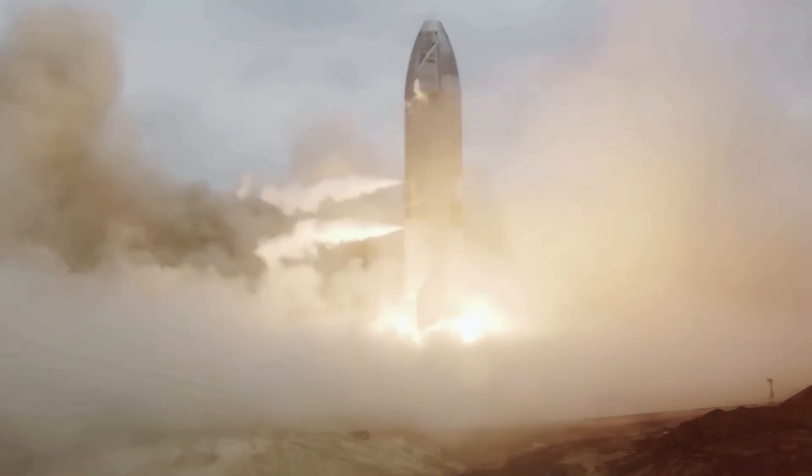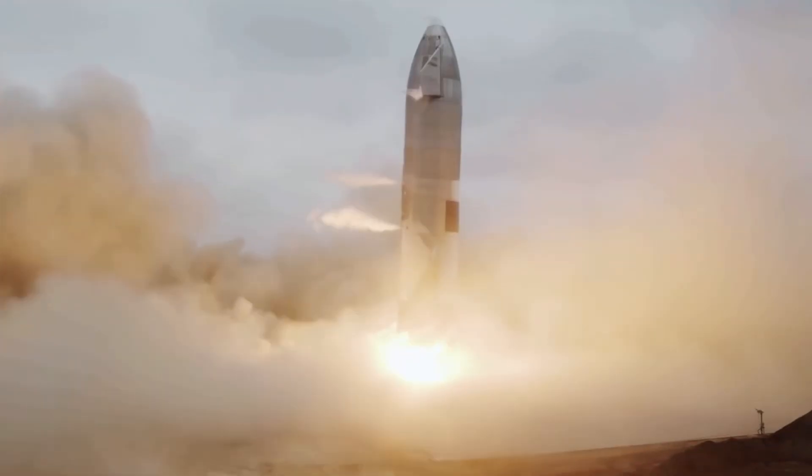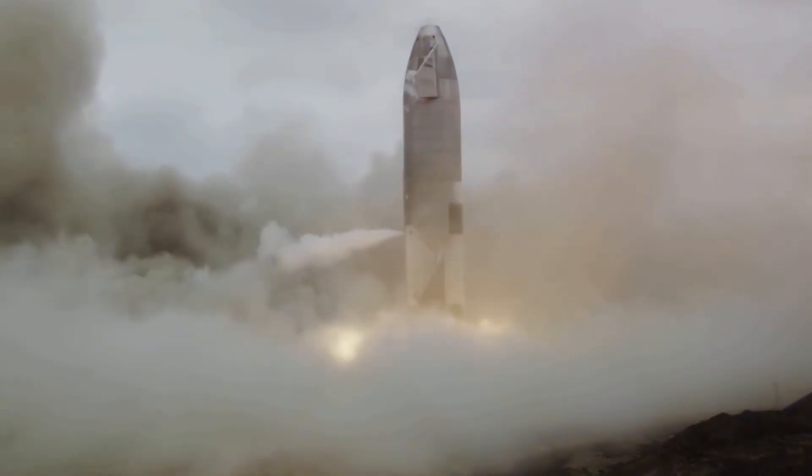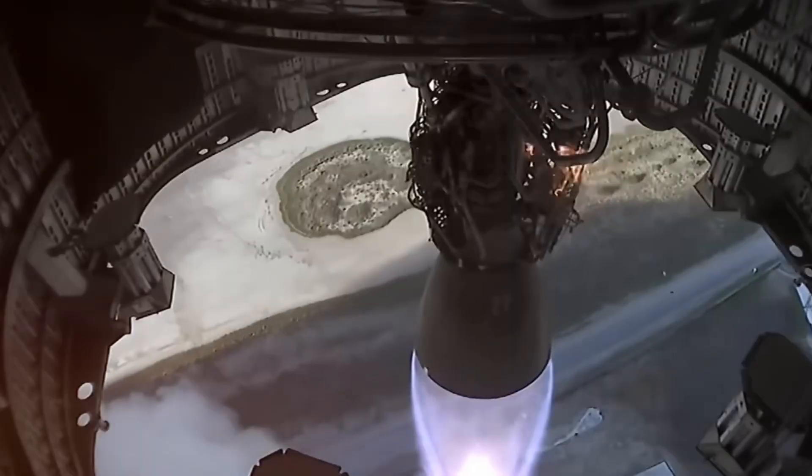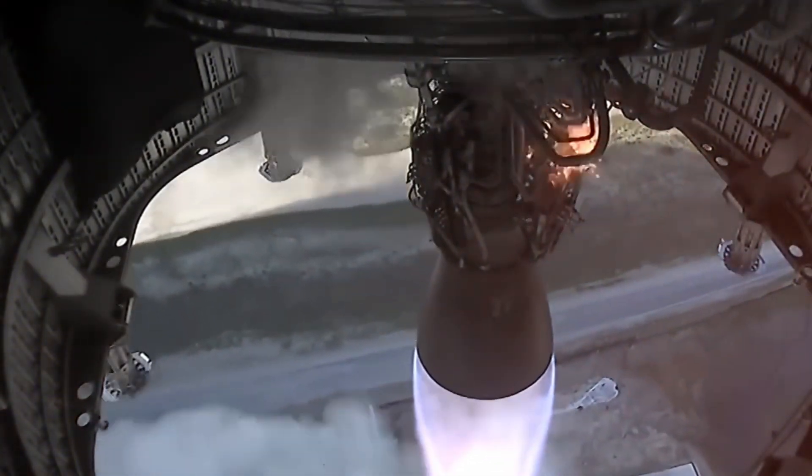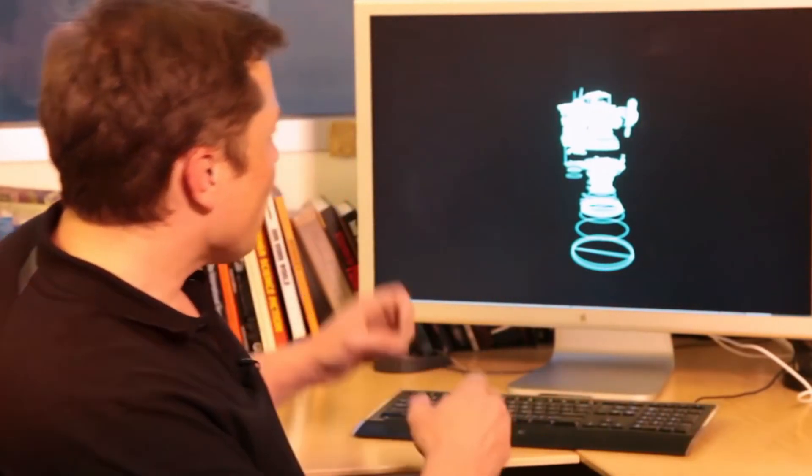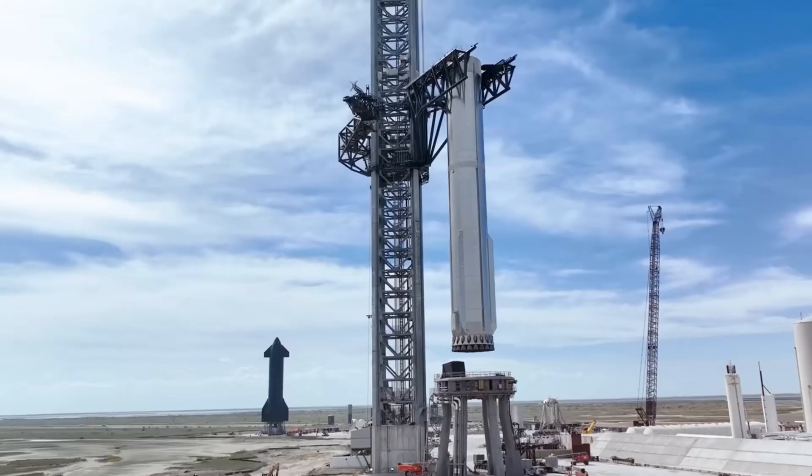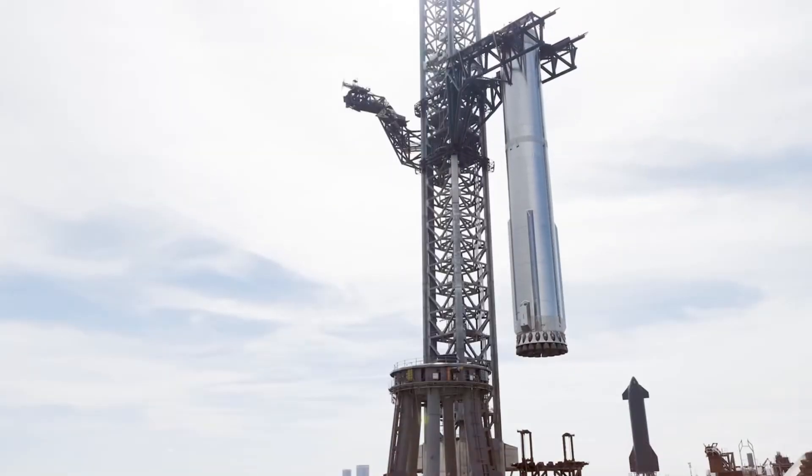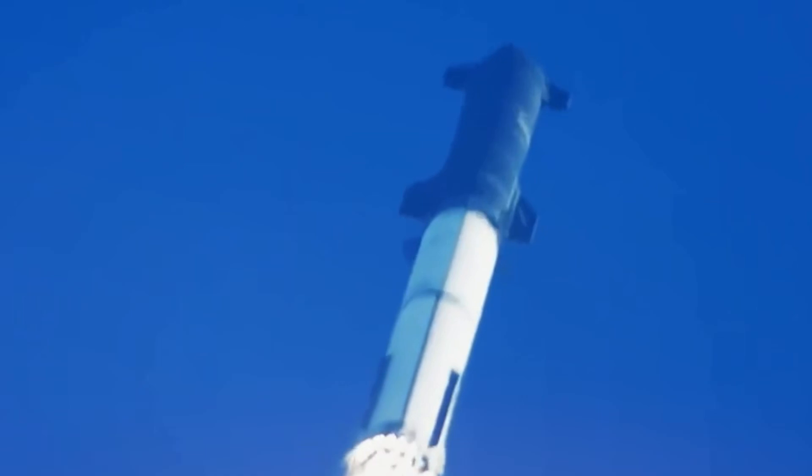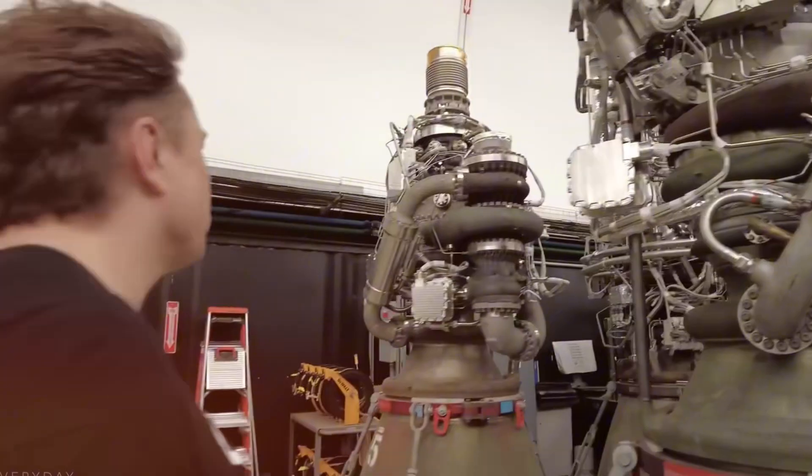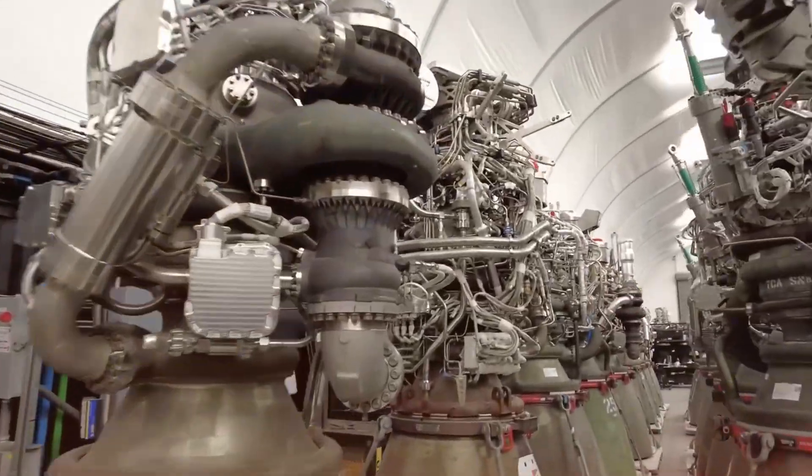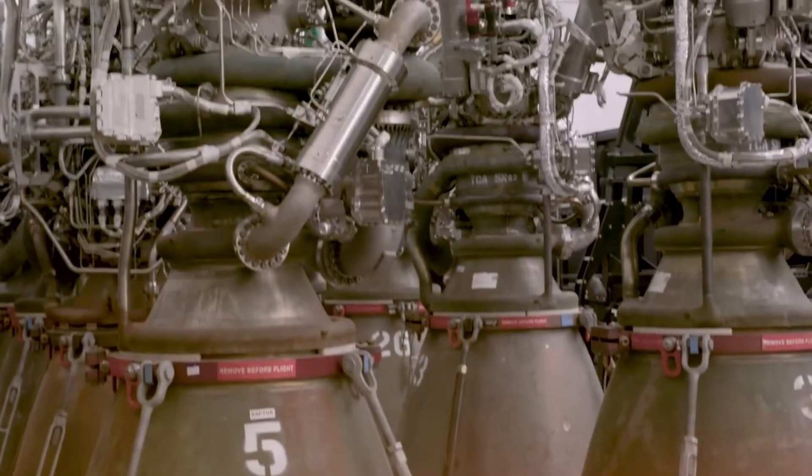The breakthrough came through a radical rethinking of engine architecture. Rather than accepting the traditional approach of external routing, SpaceX's engineers began exploring ways to internalize the engine's flow paths. This wasn't just about hiding pipes, it was about fundamentally reimagining how propellants and gases could move through the engine in more efficient ways. The team developed innovative valve plates that could combine multiple valves into single components, dramatically reducing the number of potential failure points.